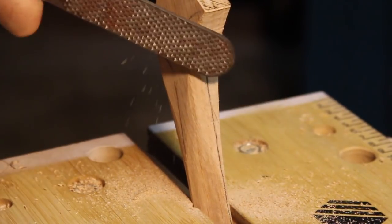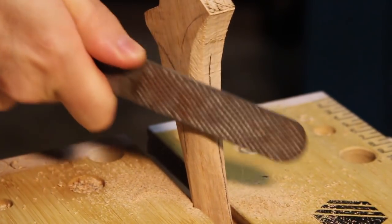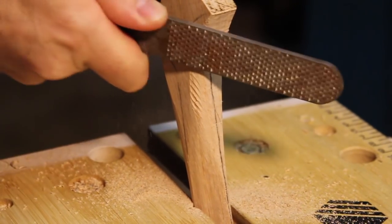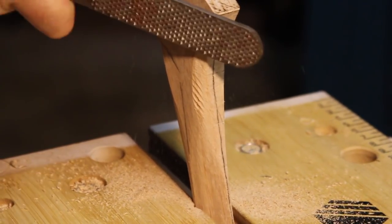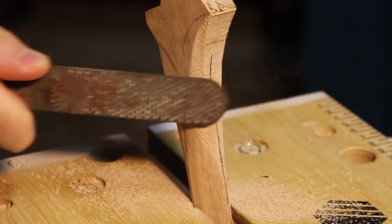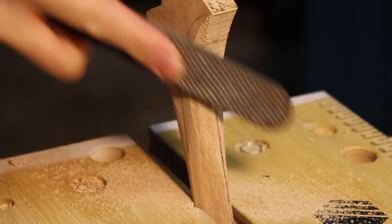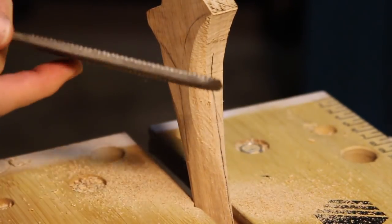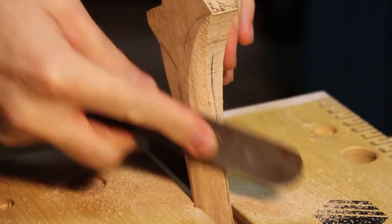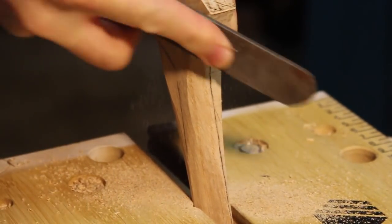The spokeshave was a little too big and not really the right shape to get into the small curved area, so I used files. I started off with a pretty aggressive cut to hog away most of that wood, and then I switched to the finer side to erase those gouge marks.